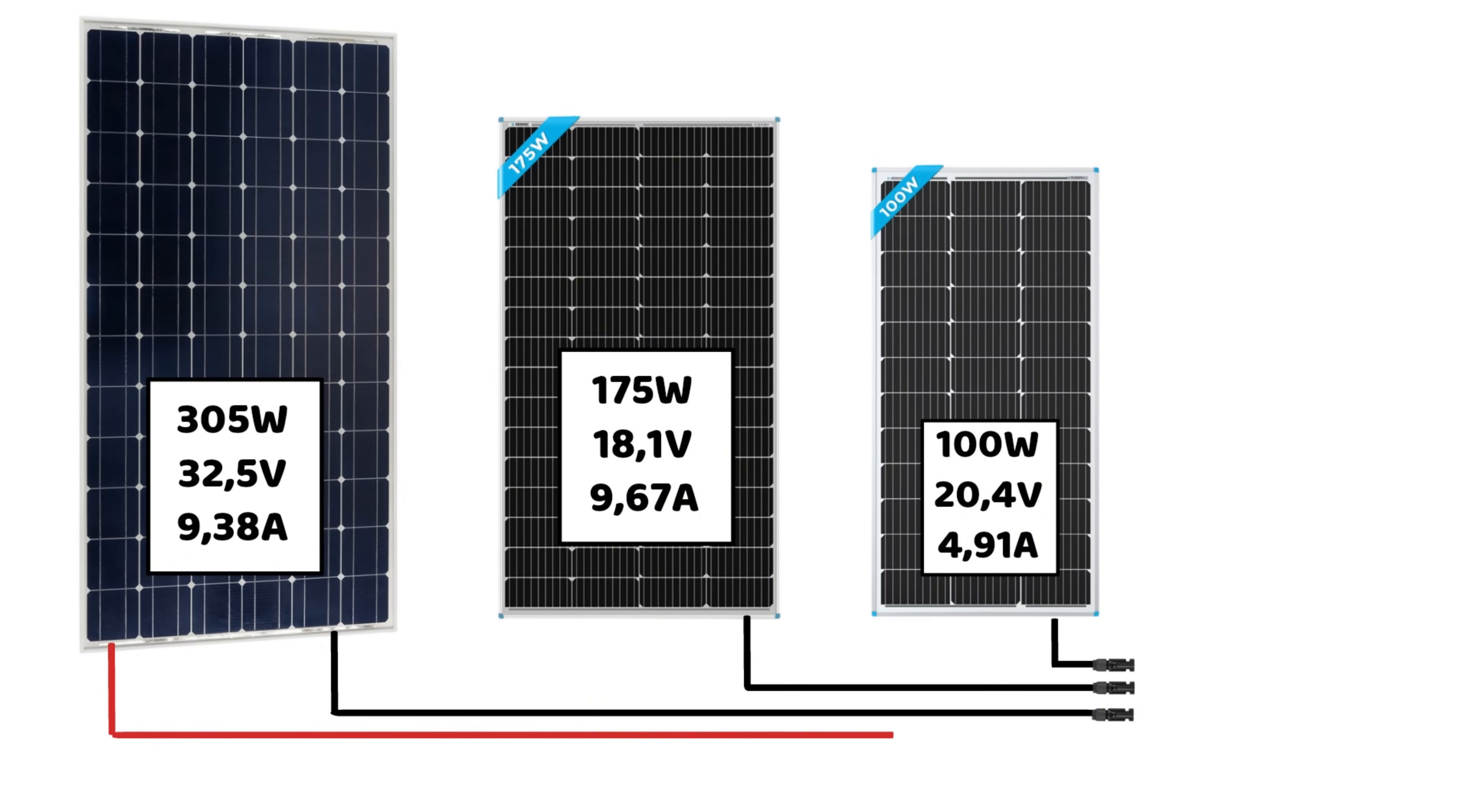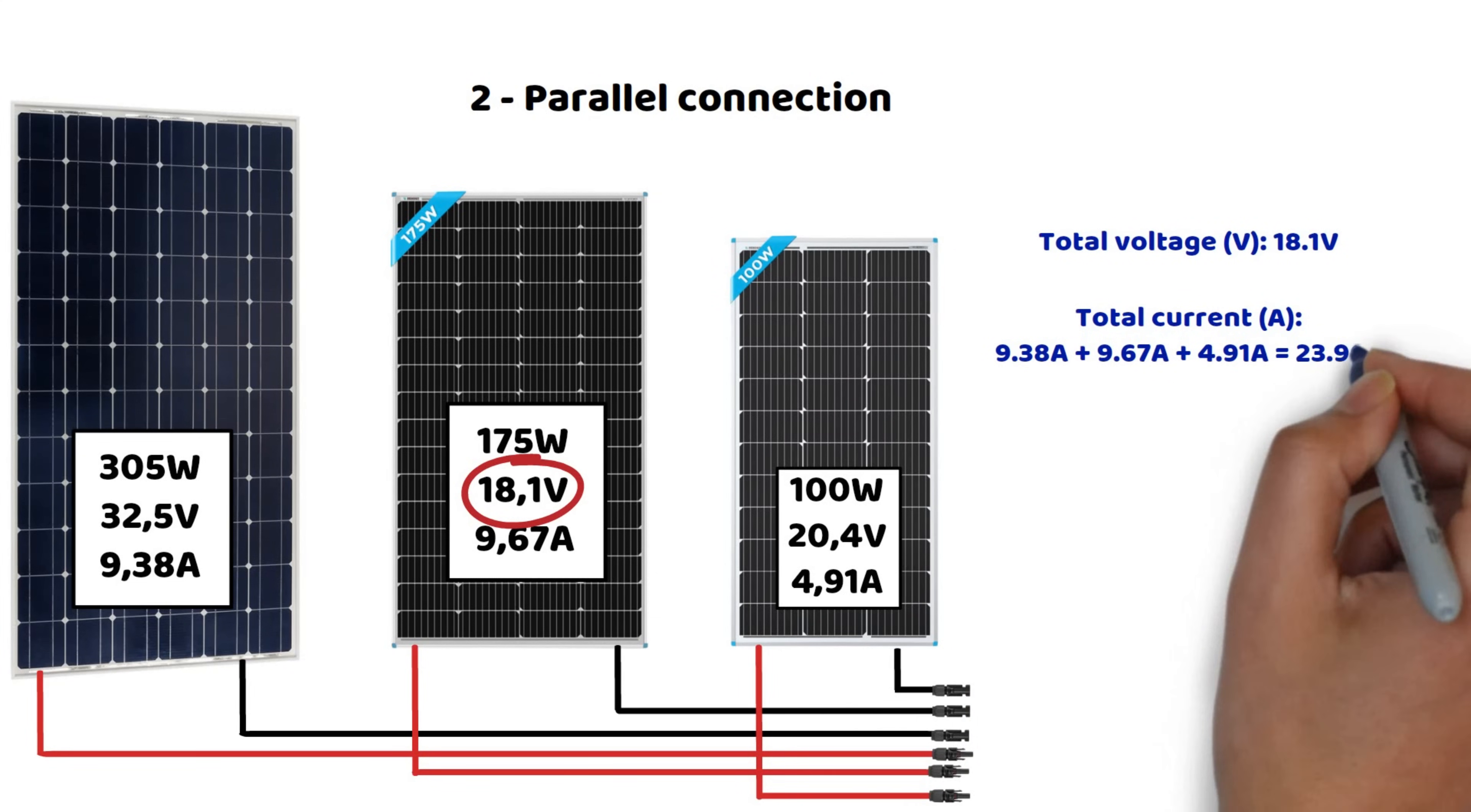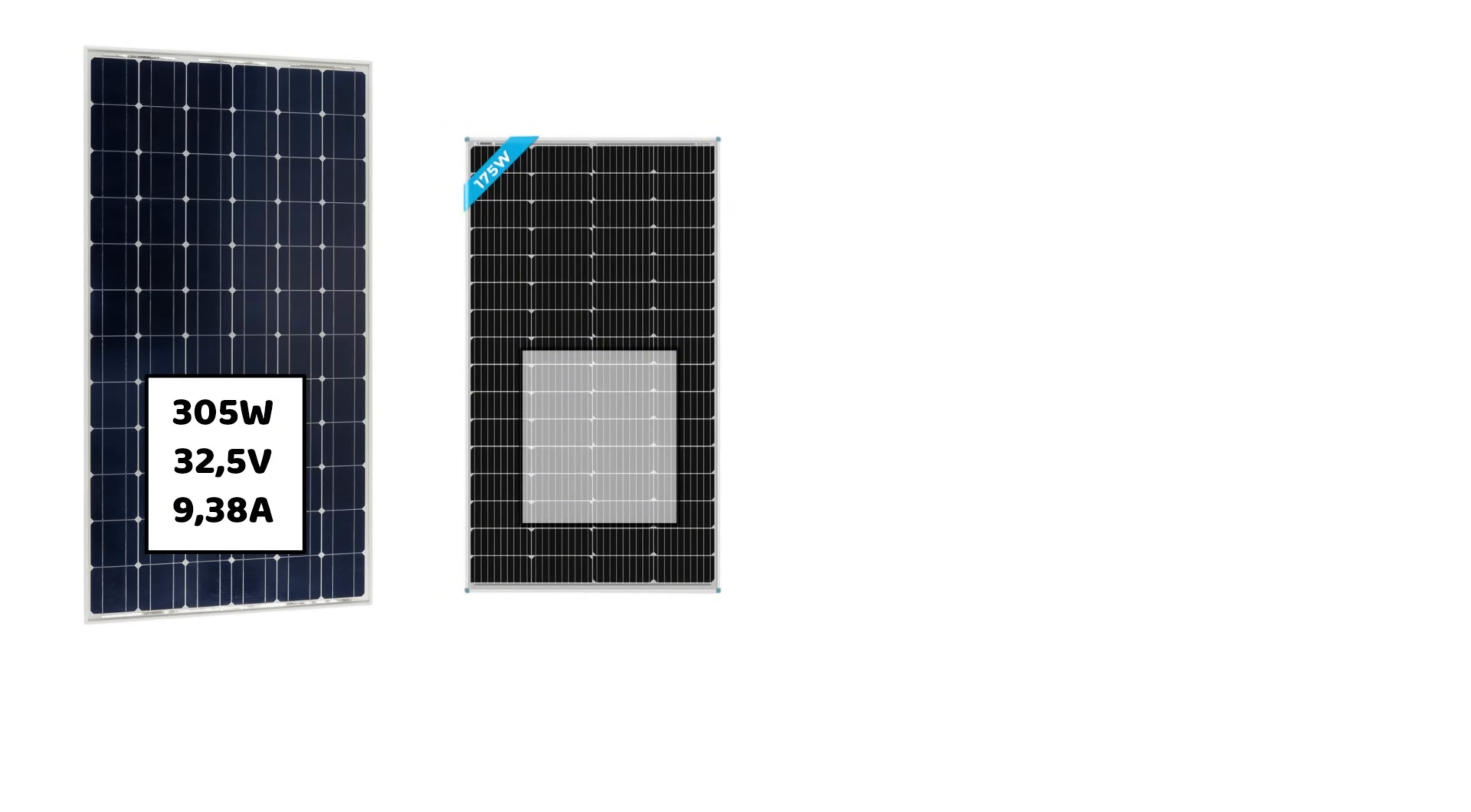Now let's calculate with a parallel connection of these three solar panels. As we've already mentioned, in a parallel connection, the currents add up, and the voltage is limited to the panel with the lowest voltage. The total voltage will therefore be 18.1 volts, which is the lowest voltage among the three panels. The total current is calculated by adding 9.38 amps plus 9.67 amps plus 4.91 amps equals 23.96 amps. With these values, the total power will be 433.6 watts. This corresponds to an efficiency of 74.8%. While this configuration is certainly more efficient than the series connection, it's still far from ideal. Wouldn't you agree?